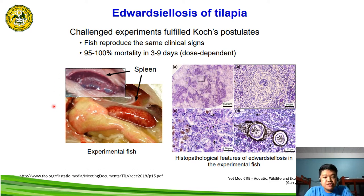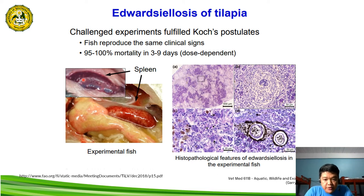These are the lesions present in fish experimentally infected with edwardsiellosis — the spleen showing the presence of white spots, along with histopathological features of edwardsiellosis in the experimental fish.